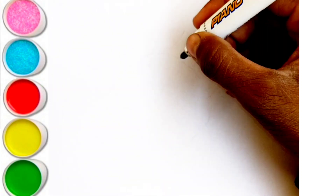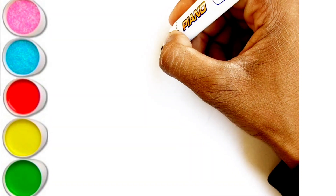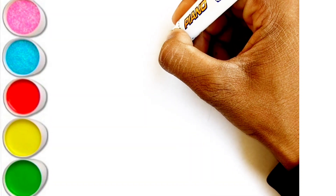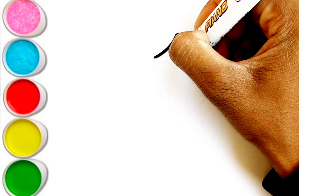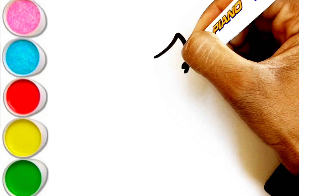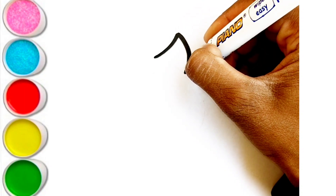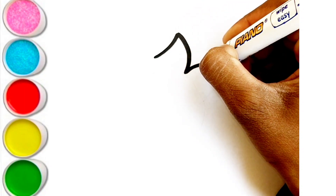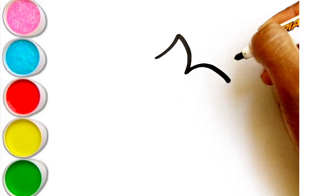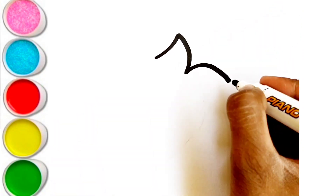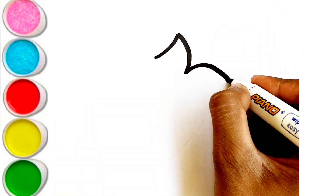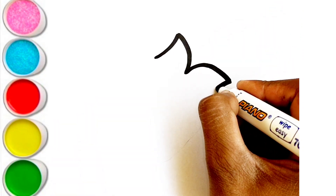A is for Apple. A-A-Apple. B is for Ball. B-B-Ball. C is for Cat. C-C-Cat. D is for Doll. D-D-Doll.